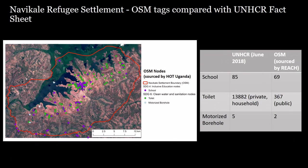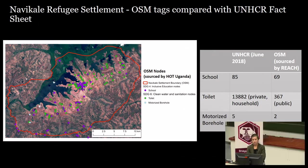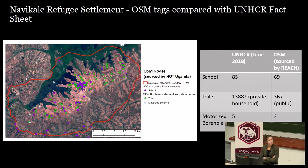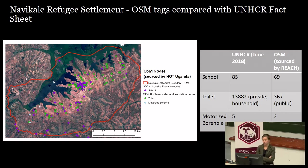Looking at Navikali refugee settlement, with OSM nodes sourced by HOT Uganda rather than REACH, we see differences in school counts, the same pattern with private versus public toilets, and a slight difference in motorized borehole counts.